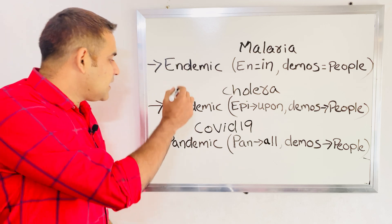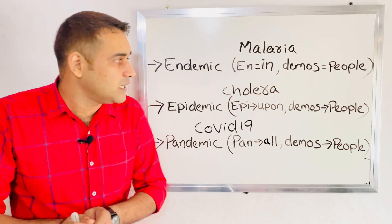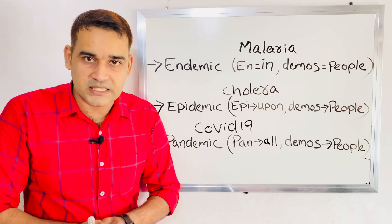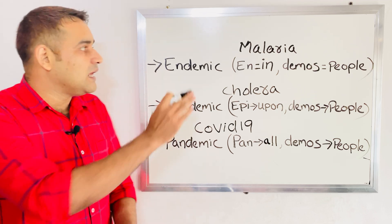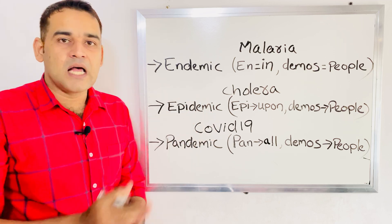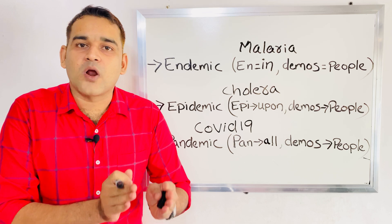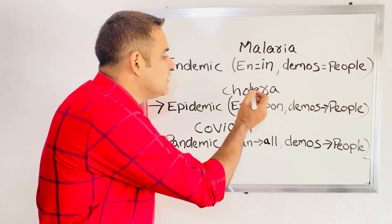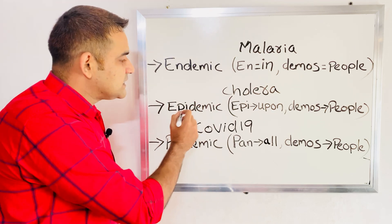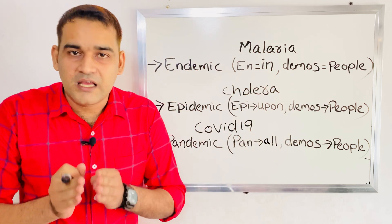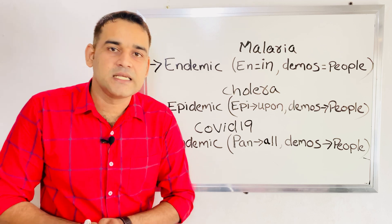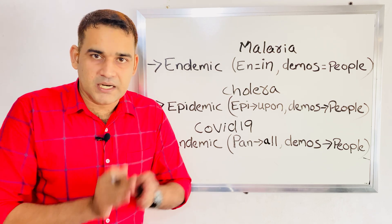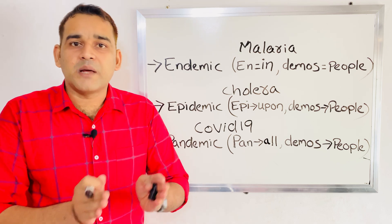So regarding endemic, epidemic, and pandemic — no need for any confusion. Endemic means the constant presence of disease in the people of a particular area; that disease is fixed. Good examples are common cold or malaria in India. Epidemic means an outbreak of disease more than normally expected in a particular area or community — for example, cholera in India.